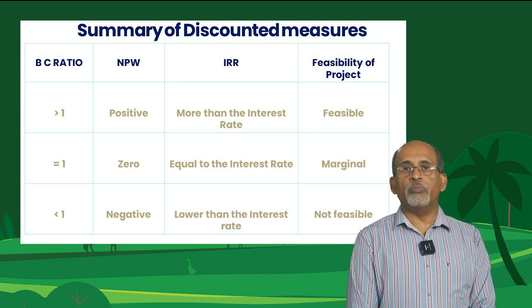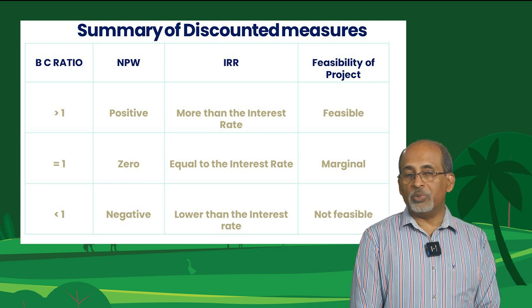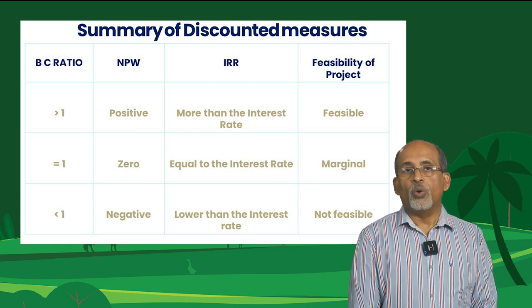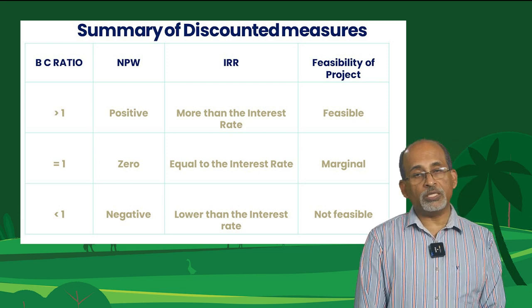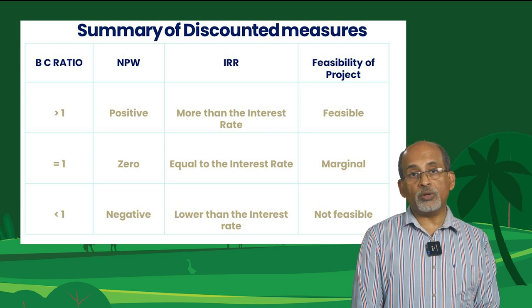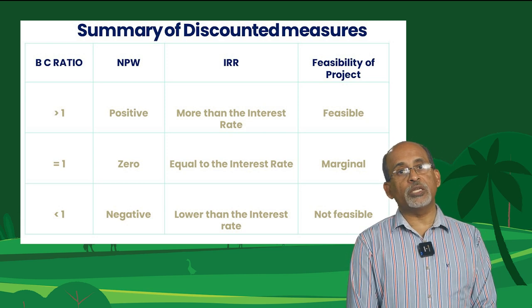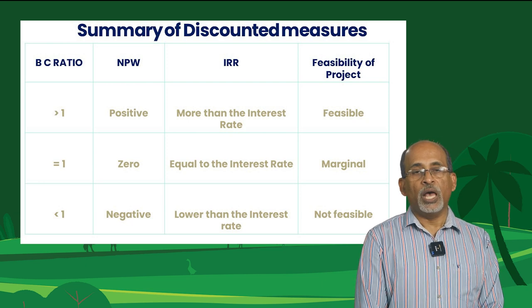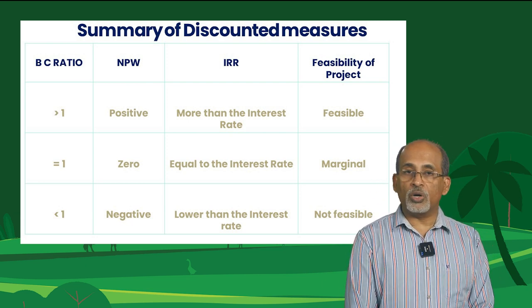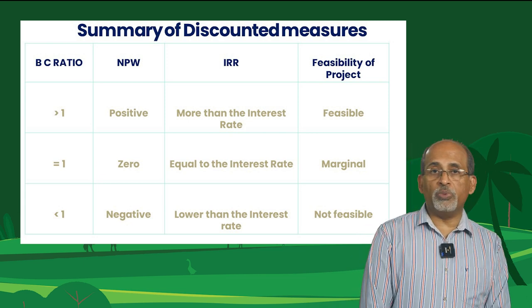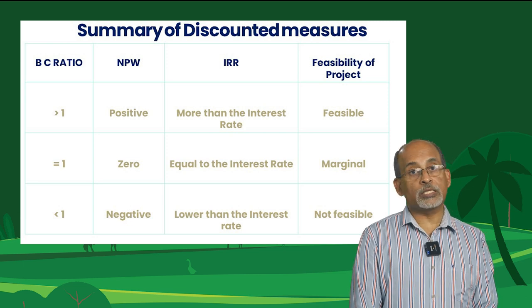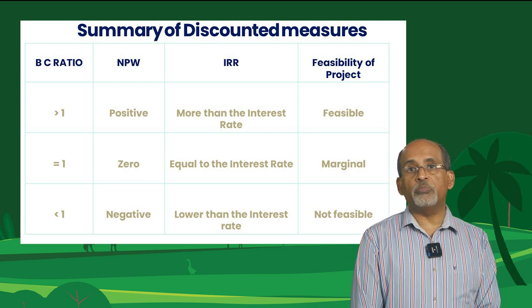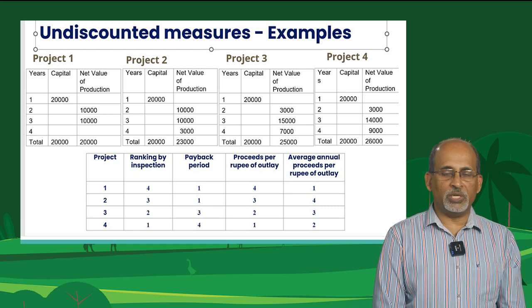To summarise the discounted measures: when the benefit cost ratio is greater than 1, NPW is positive and IRR is more than the interest rate — the project is feasible. When the benefit cost ratio equals 1, NPW is zero and IRR equals the interest rate — the feasibility is marginal. When the benefit cost ratio is less than 1, NPW is negative and IRR is less than the interest rate — the project is not feasible. IRR is preferred because it is an unambiguous, consistent, and unique estimate, accounts for the time value of money, and has wider applicability.